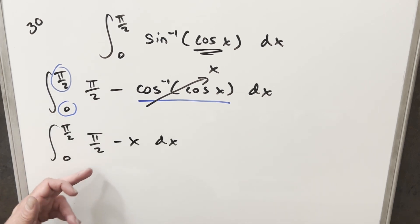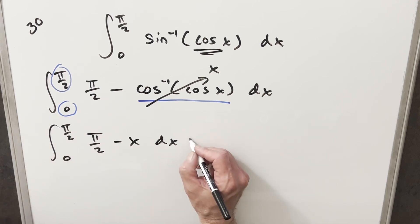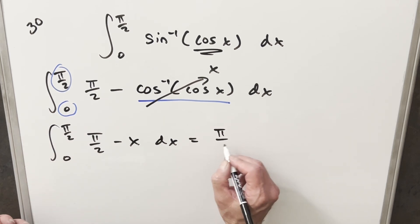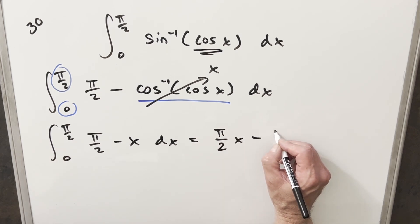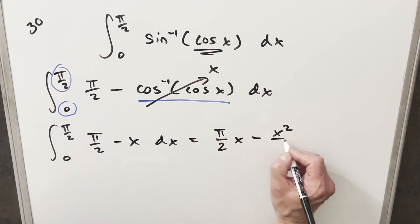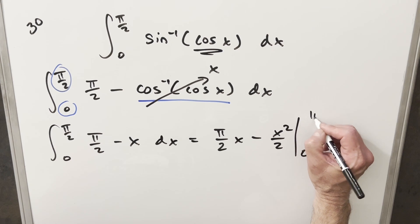Now that we have this simplified, π/2 is just a constant so we can use power rule on this. I'll go ahead and integrate. For the first term we're gonna have π/2 times x, and for the next one, x squared over 2. We just need to evaluate from 0 to π/2.